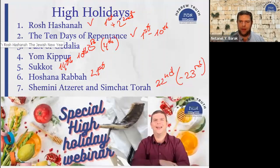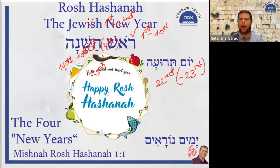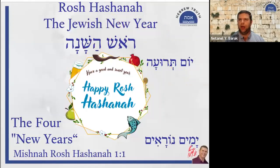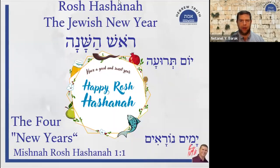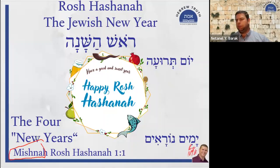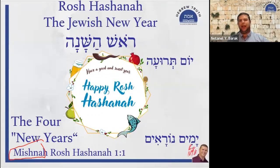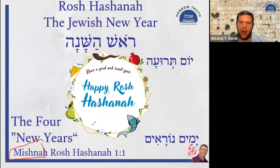Starting with Rosh Hashanah: it literally means 'the head of the year,' the beginning of the year. The Mishnah — a post-biblical collection of mostly Jewish law, organized by tractates and subjects, divided into six orders with all in all sixty tractates — in the order that deals with the annual cycle of holidays, has a tractate dedicated to Rosh Hashanah.